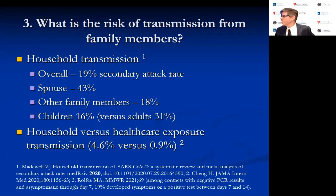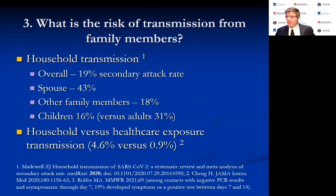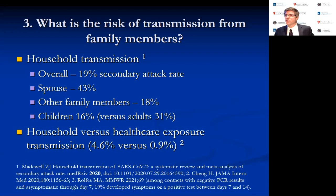What is the risk of transmission from family members? The overall household transmission rate from a systematic review is about 19%. If your spouse has COVID-19, the risk is even higher, about 43%. Interestingly, children seem less likely to transmit or acquire COVID-19 than adults, for reasons that aren't entirely clear. Healthcare exposure carries much less risk than household exposure, given the prolonged close contact in the home setting.